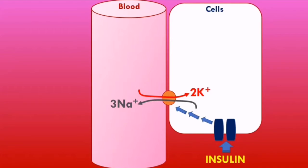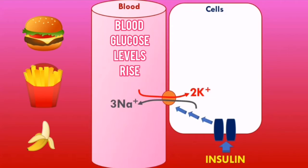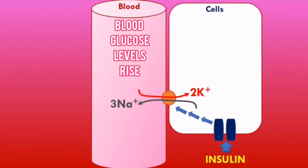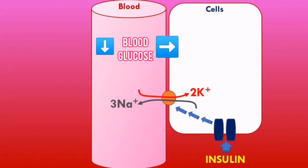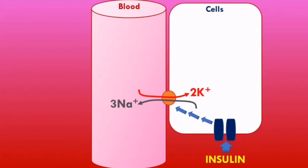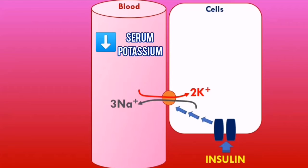This function of insulin makes sense when you think about it. After eating a meal, blood glucose levels rise and stimulate the release of insulin from the beta cells of the pancreas. Insulin helps lower blood glucose by stimulating uptake of glucose into peripheral tissues. But after a meal, serum potassium levels also rise, so insulin will also help lower serum potassium levels by stimulating the sodium-potassium ATPase pumps and causing potassium to shift towards the intracellular compartment.